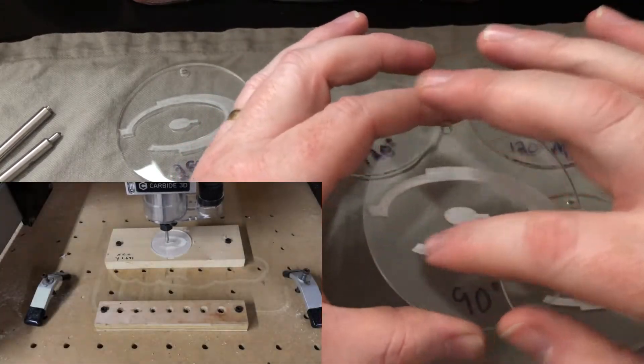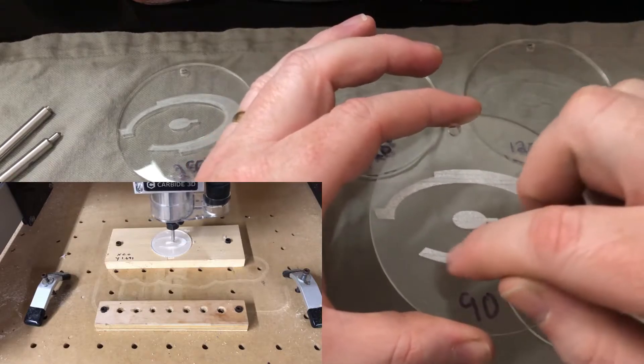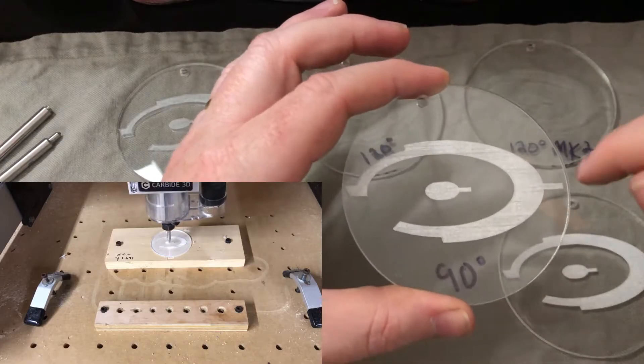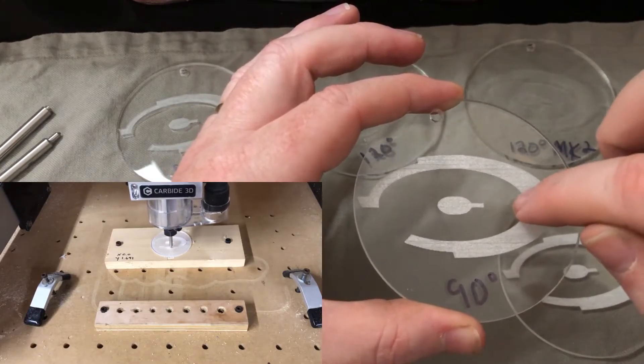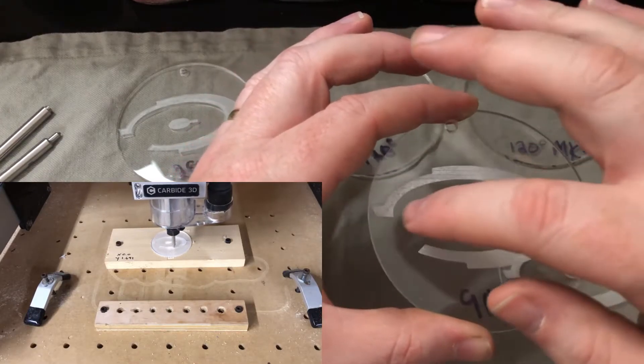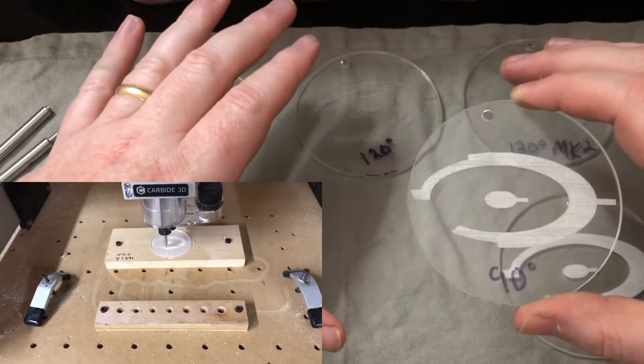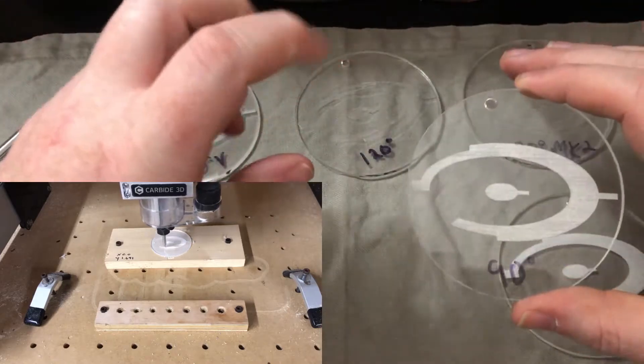The first time I tried the 90 degree bit, I had a lot of trouble getting an even cut across. It starts down here at the bottom, goes across until it's done, then does the outline. Well, it was getting good cuts, good surface right here, then over here it looked like it was barely touching.